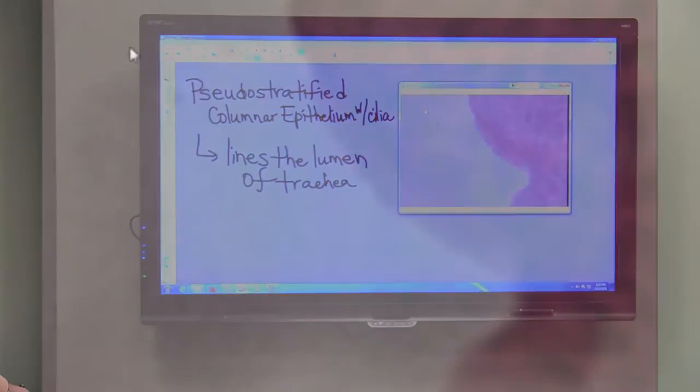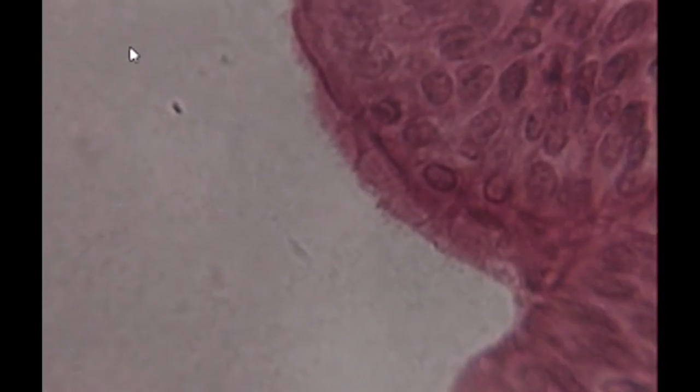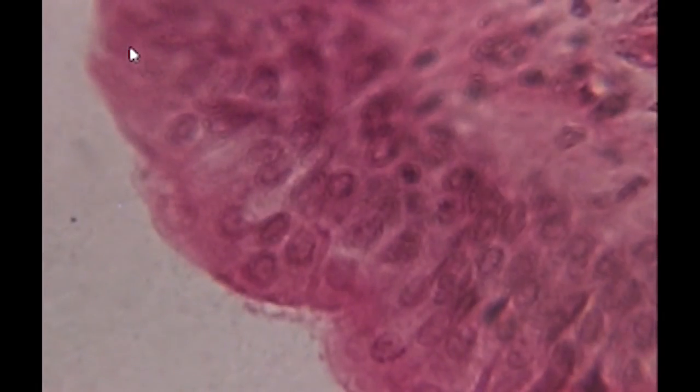Now, the thing about microscope slides is when these are made, you're cutting through different planes. We just want to find an area where we're looking at the tissue in a way that will help us understand exactly how it's put together.